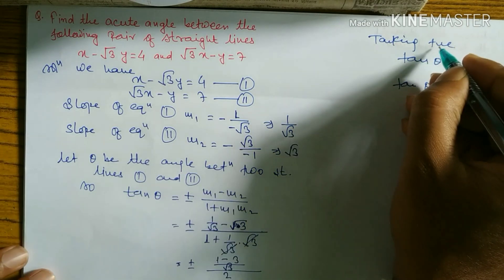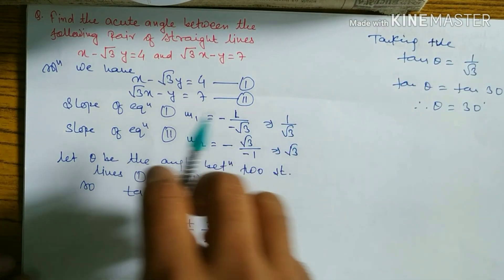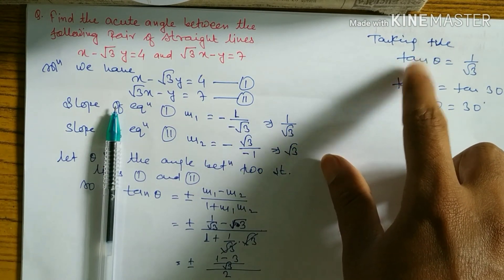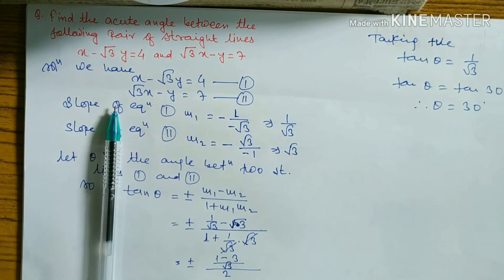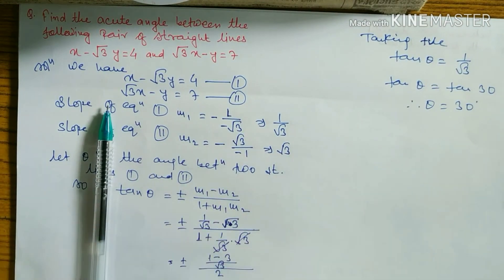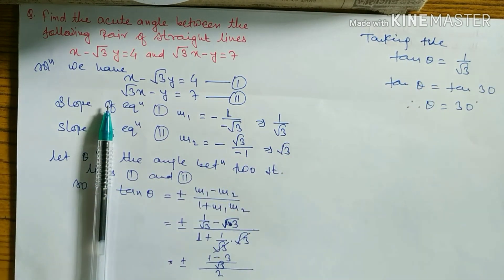To summarize: to find the acute angle, take the positive value; to find the obtuse angle, take the negative value, because obtuse angle lies between 90 to 180 degrees where tangent is negative. Thanks for watching my video — the next question I will do for more practice so you can understand properly.